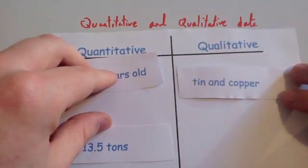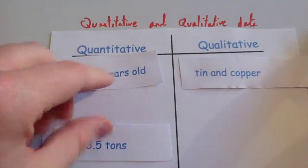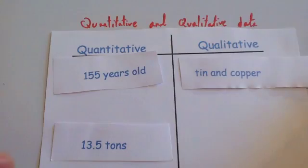Whereas tin and copper is describing what it is made of. So it is qualitative. It has to do with a description or words.